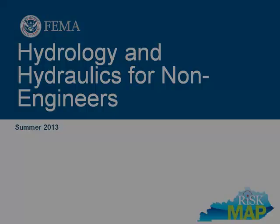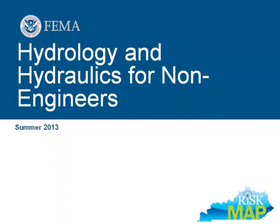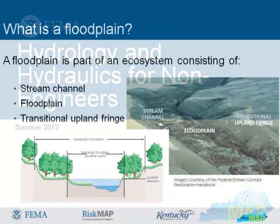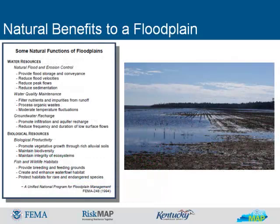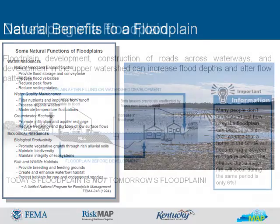This learning module provides an overview of hydrology and hydraulics for non-engineers. This slide depicts the floodplain stream channel and transitional upland fringe. The purpose of the floodplain is to store floodwaters during a flooding event. Floodplains are a naturally occurring part of an ecosystem and are serving a purpose. The plants and wildlife that are found in a floodplain serve beneficial purposes.